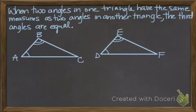Now we'll talk about triangles. When two angles in one triangle have the same measures as two angles in another triangle, the third angles are equal. We're going to do just a quick proof to prove that this is the case. In the beginning of this lesson, we said AA equals AAA. That is what we're proving here.